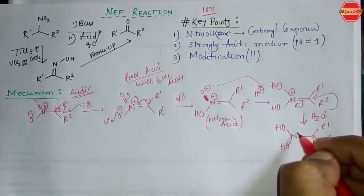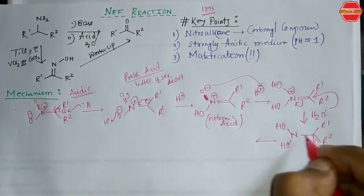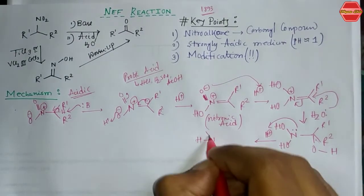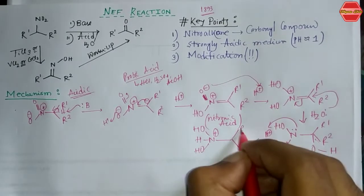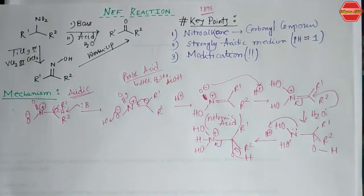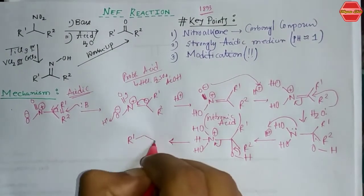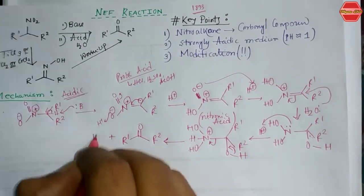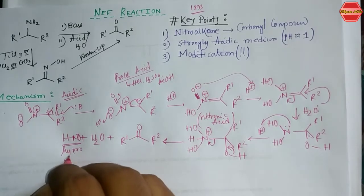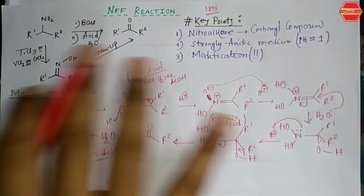The N–O bond then breaks and leaves the system. The nitrogen, which has a lone pair, takes a proton from the acidic medium, giving an HO–N(+) species with R1, R2, and an OH group. This bond then leaves the system as hyponitrous acid (HNO). The final product obtained is the ketone derivative, and the side products are water and HNO (hyponitrous acid). This completes the acidic condition mechanism.